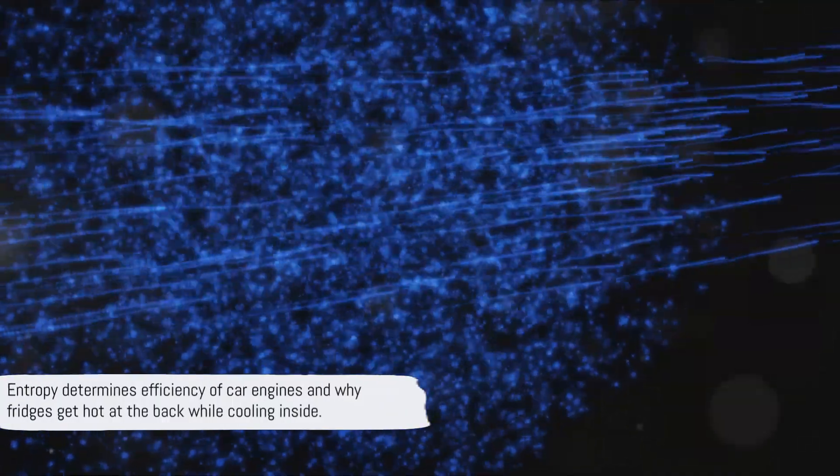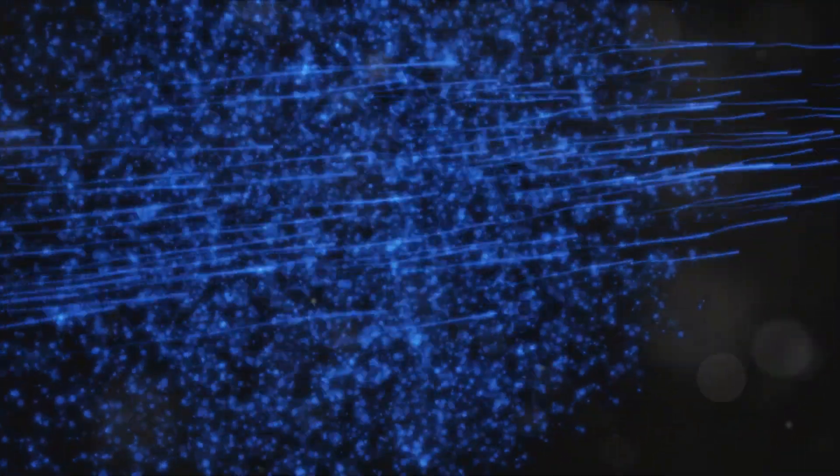This is why your car engine gets hot as it runs, or why the back of your fridge feels warm while it cools the inside. It's all entropy, ensuring energy keeps spreading out, from hot to cold, from concentrated to dispersed. So entropy decides the efficiency of your car engine, and also why your fridge gets hot at the back, while it cools the inside.